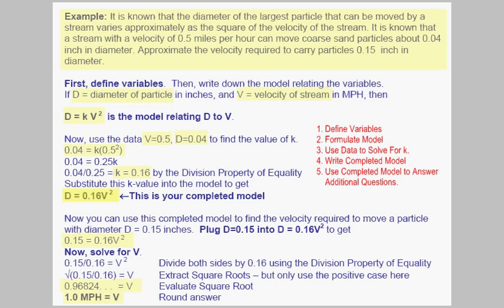We can summarize this process with five steps. Number one, define the variables. Formulate your model. Use the data given to solve for k in your model. Write out the completed model, and then you can use your completed model to answer other additional questions.